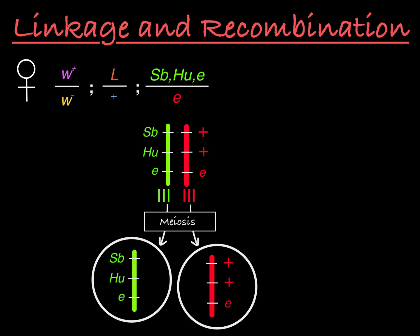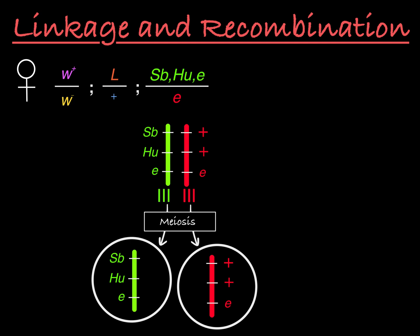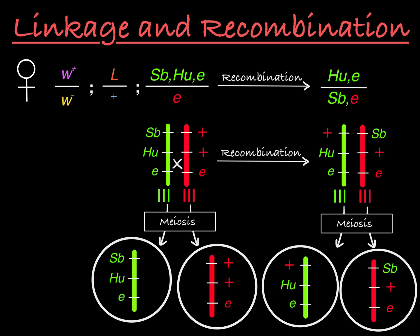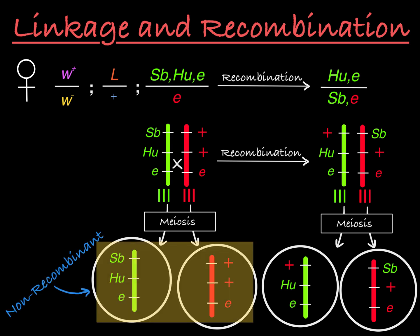Remember that recombination can happen during meiosis in female flies, so we have to account for that in our column map. The way we account for potential recombination is by noting all possible parent and recombinant genotypes before mapping. Looking at this same third chromosome pair, we see that recombination can happen between the genes stubble and humeral, resulting in these new recombinant chromosomes. Swapping the two ebony alleles doesn't create novel chromosomes, so we can ignore that potential. After accounting for recombination, these are the four potential third chromosomes this female could pass on: two non-recombinant options and two recombinant options.